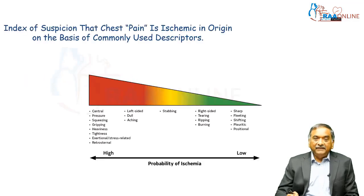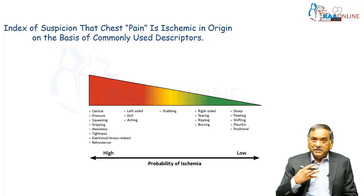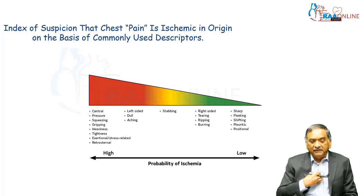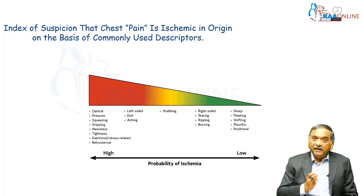When one gets a patient with chest pain, it's important to listen to their story. If the patient comes with a history saying they have a central chest pain which is a pressure, squeezing, gripping, heaviness, tightness, and is exertional or stress-related and it's in the retrosternal region, have a very high index of suspicion that this is ACS.